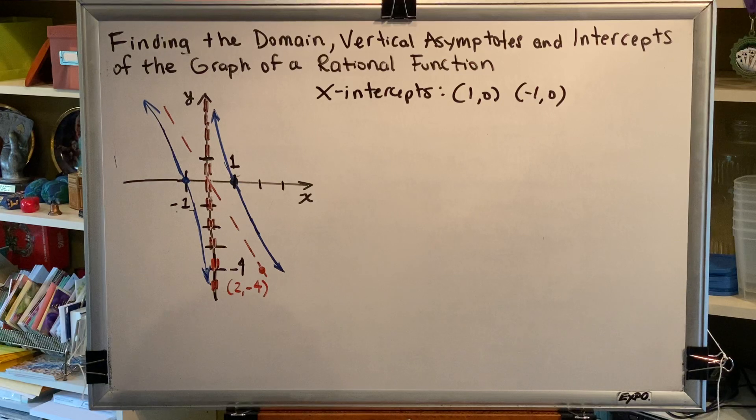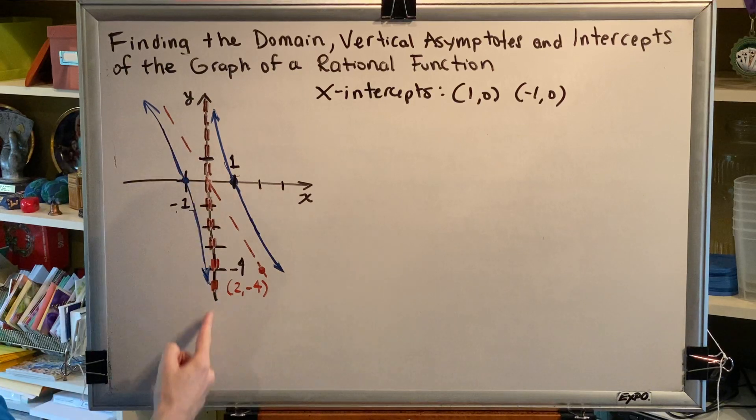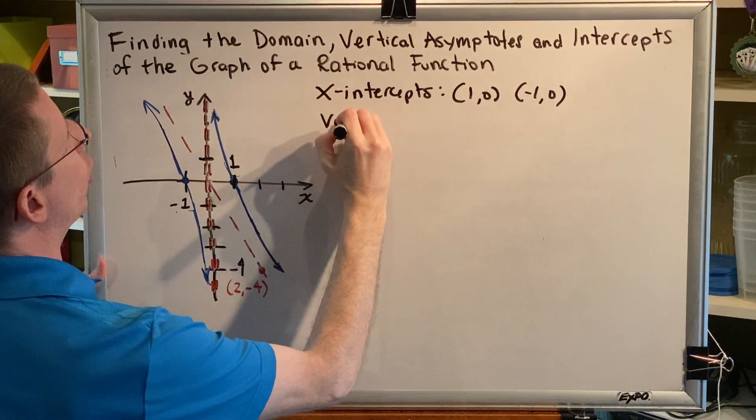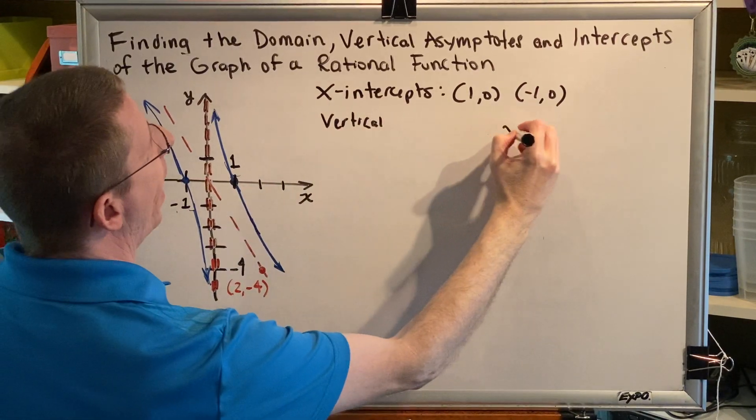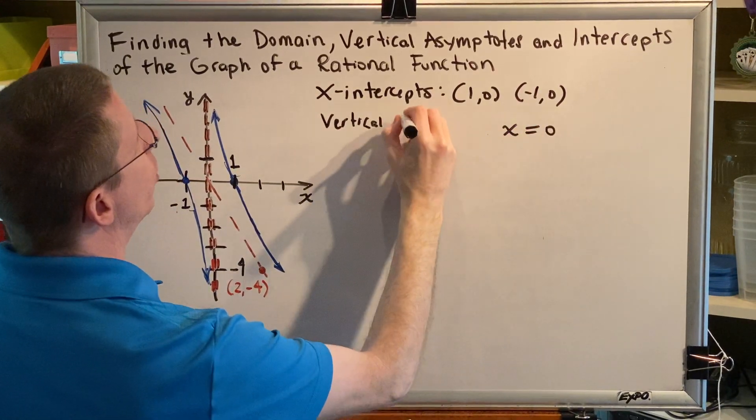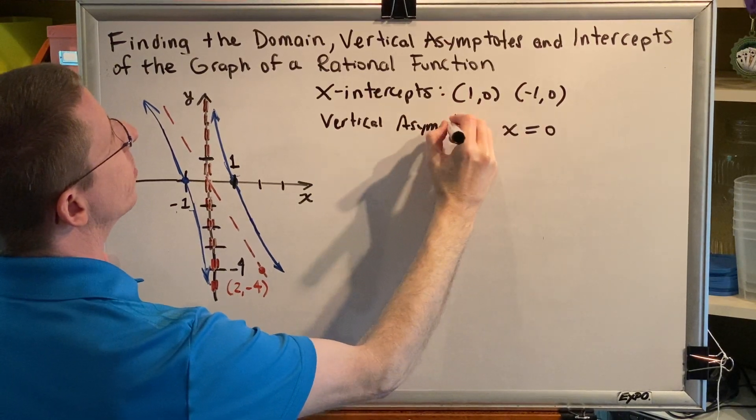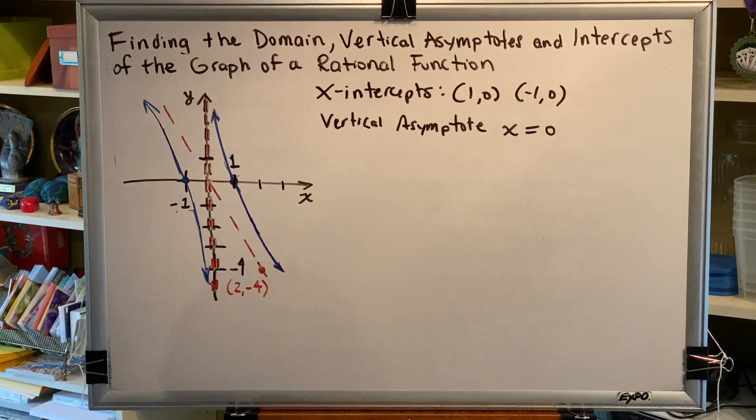Okay, the next thing would be the vertical asymptotes. So we can see that we have just one vertical asymptote. It is this vertical line sitting on top of the y-axis. And the equation of the y-axis is x equals 0. So our only vertical asymptote for this graph is x equals 0.